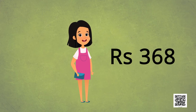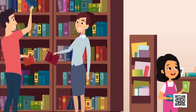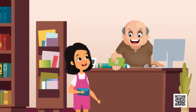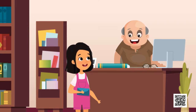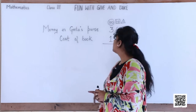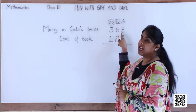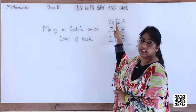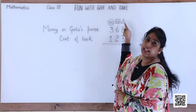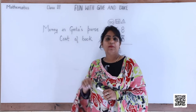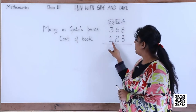Now look here — let us help Gita. Gita had rupees 368 in her purse. She bought a book for rupees 123. How much money is left in her purse? Let us guess — the total amount of money was rupees 368, meaning three hundreds, six tens and eight ones. The cost of the book she purchased was 123.